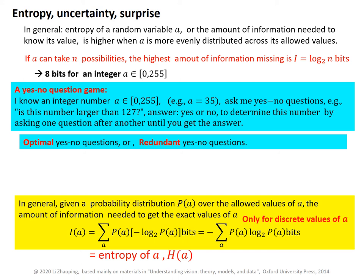What is an optimal question? It's best when the yes and no answers will be equally likely, so each question gains you one bit of information. Since the integer has an entropy of no more than 8 bits, you should not need to ask more than 8 questions to get to the true answer. But if you do not ask the questions optimally, you would need more than 8 questions. For example, you could ask: is this number equal to 1? Is this number equal to 2? Etc. Then you may need 256 questions before you get the answer. You could also ask questions like: is this number smaller than 10? And then: is this number smaller than 20? These two questions are redundant with each other, since the answer to one question partly or wholly covers the answer to the other.